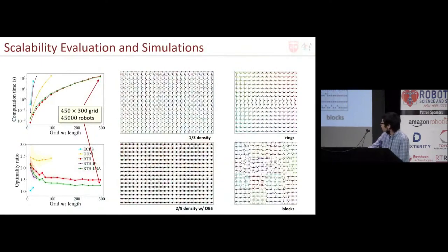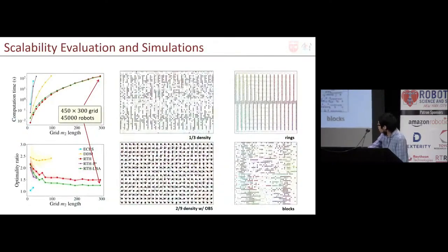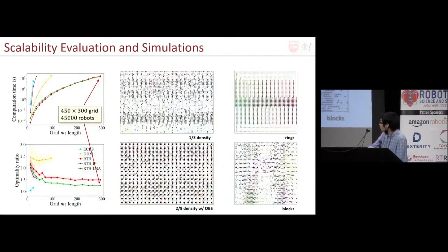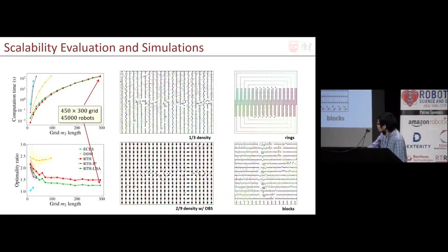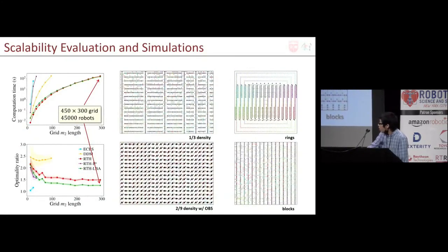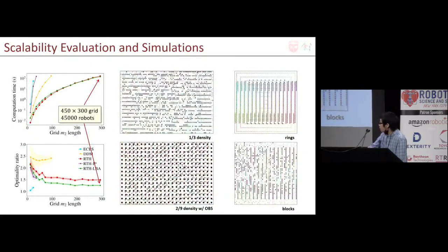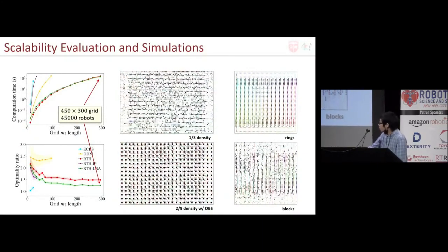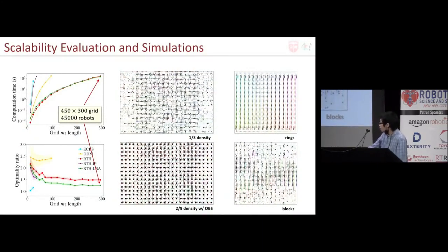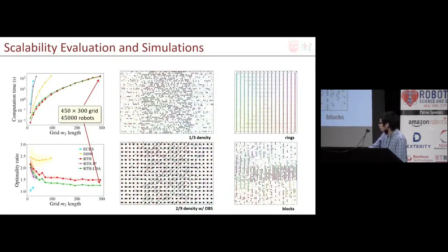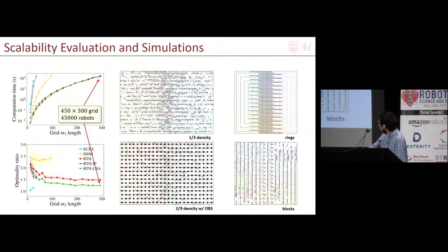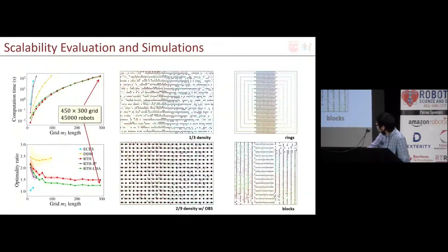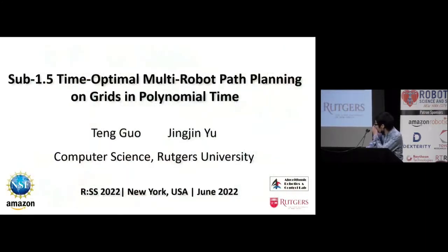We implemented all the algorithms. Here we are showing some animations of the computed plan. Note that our algorithm can scale to tens of thousands of robots, where the optimality ratio is still about 1.35. Thank you very much.